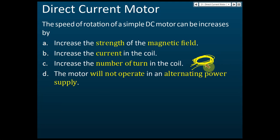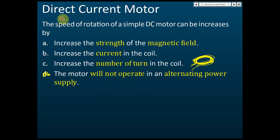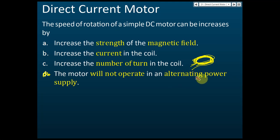More turns will make the motor rotate faster. Another important thing: this motor will not operate on an alternating power supply. This is a direct current motor — it can only operate on direct current. If you connect it to alternating current, it won't rotate, because the alternating current keeps changing direction, so the couple keeps changing direction and the coil cannot rotate. It must be connected to direct current.